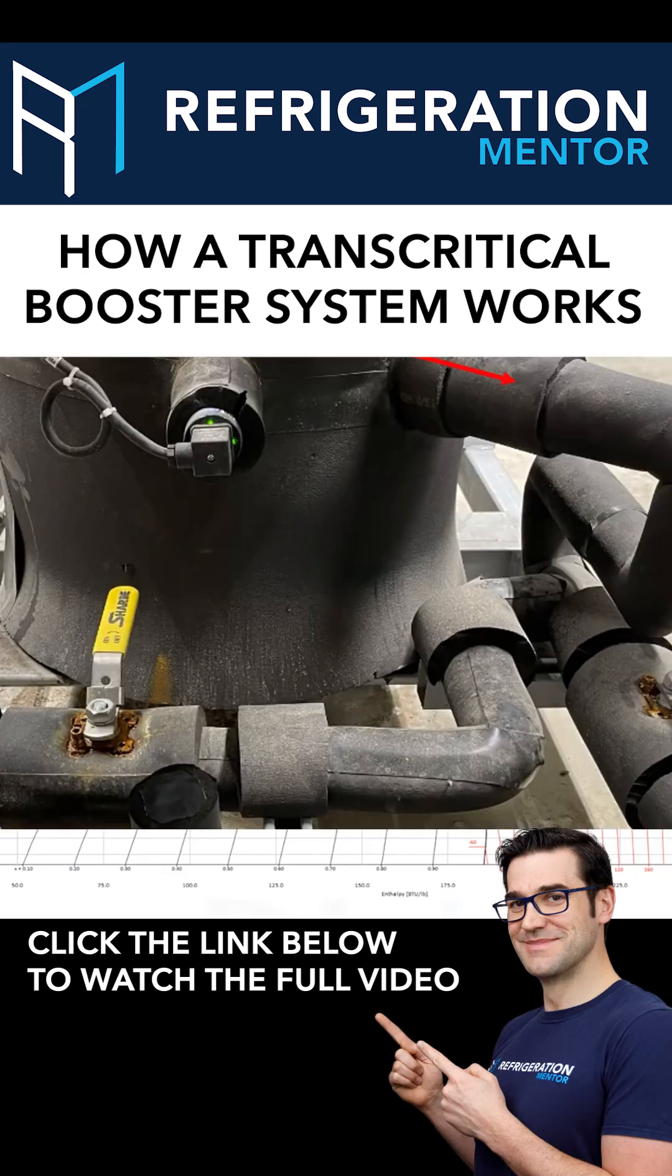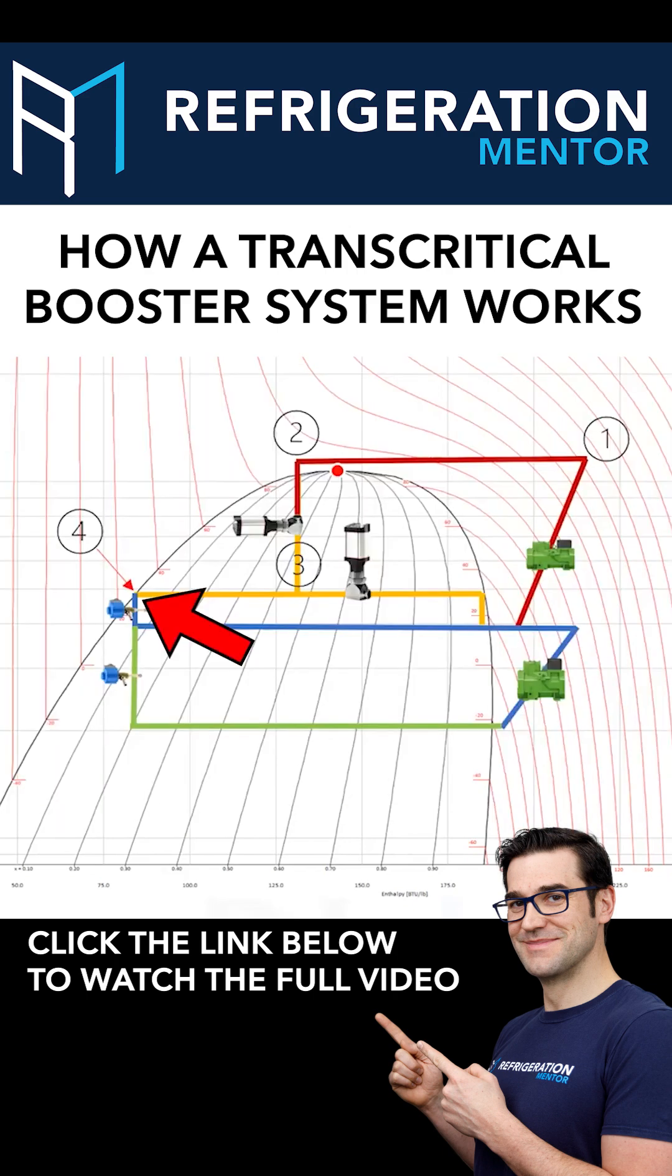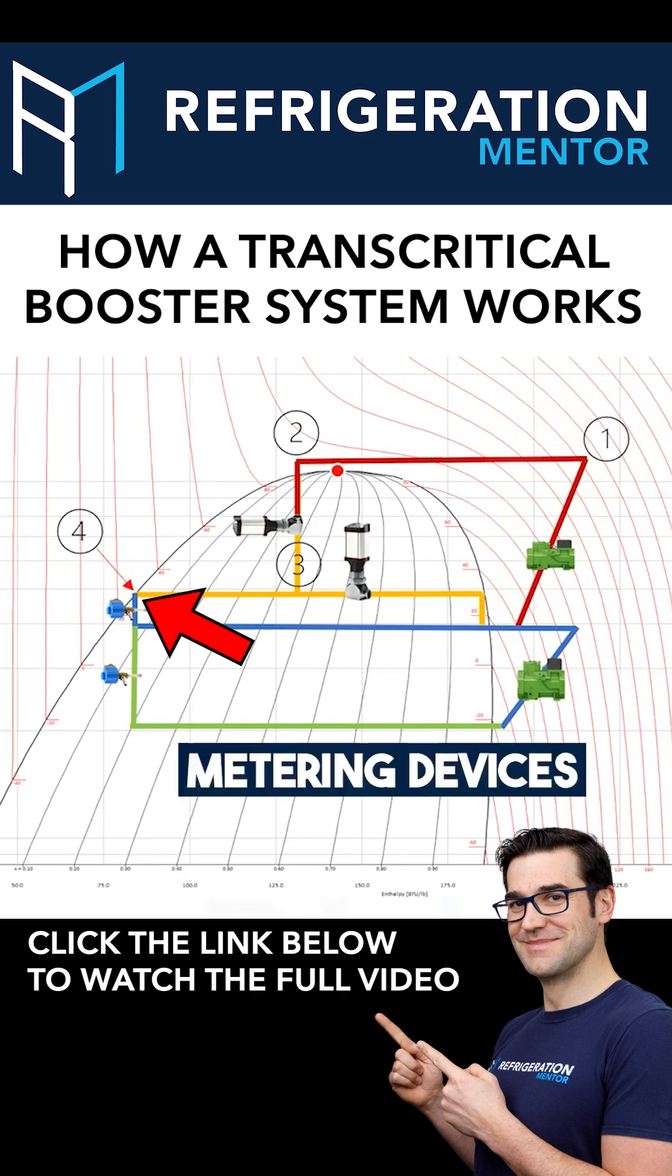This is the leaving liquid from the bottom of that flash tank receiver, and this is going out to your metering devices.